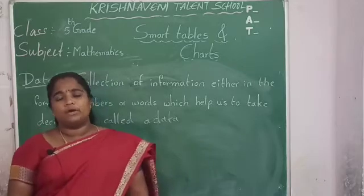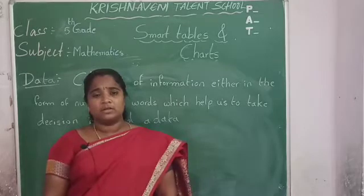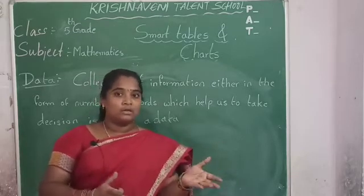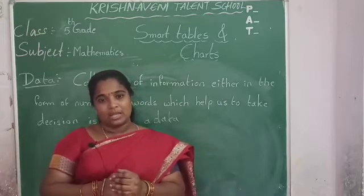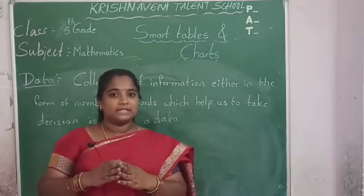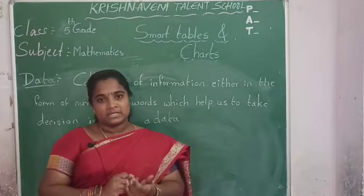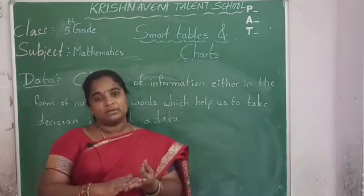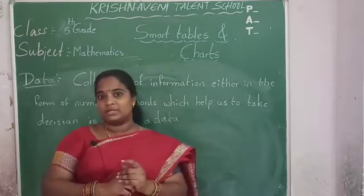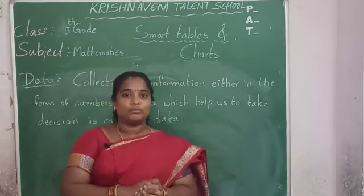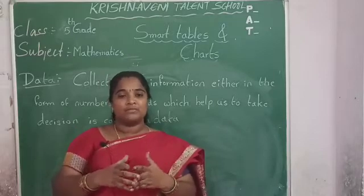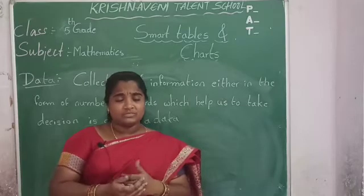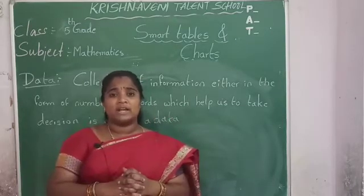For example, if your father buys a new TV — a television — first he gathers some information about televisions. He will go to a showroom and collect information about a particular model. He takes the name of different models, the cost of the televisions, and the picture clarity. He will take some details about the television from the showroom. After gathering that information, he will take the decision on which one to buy. This total process is called data.